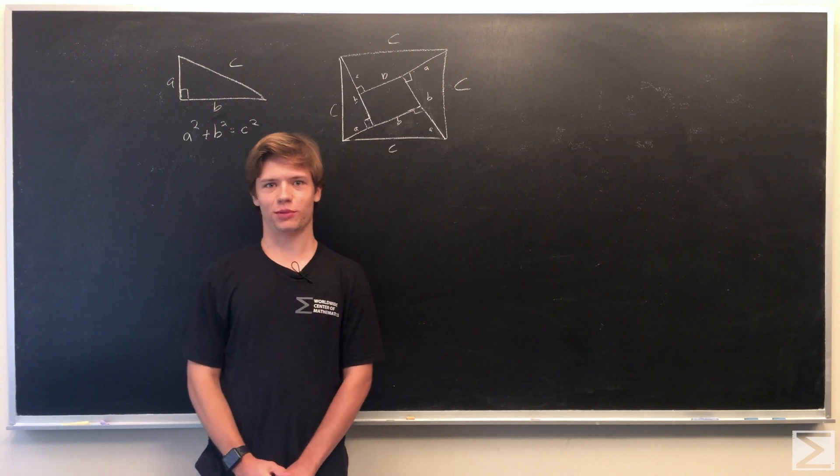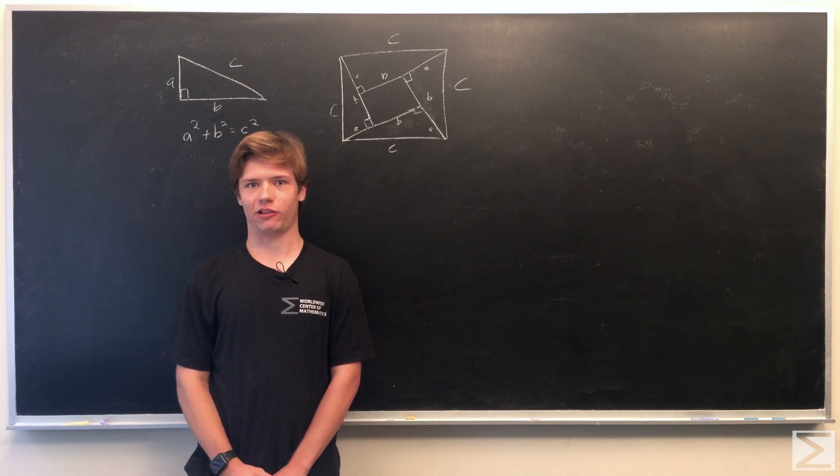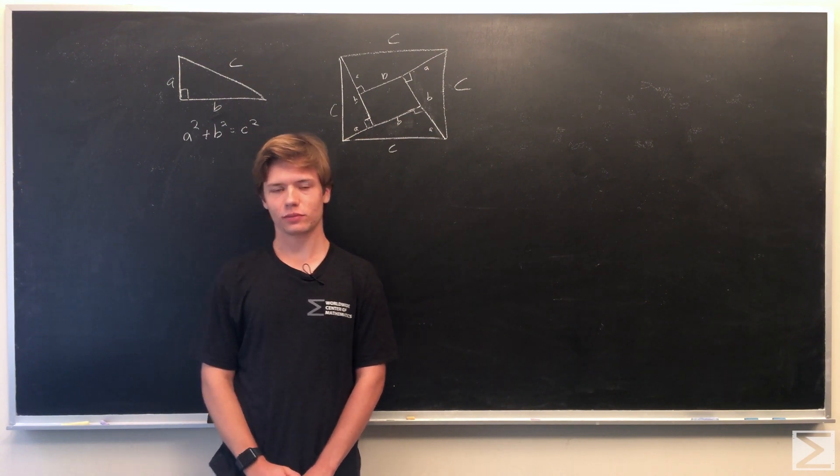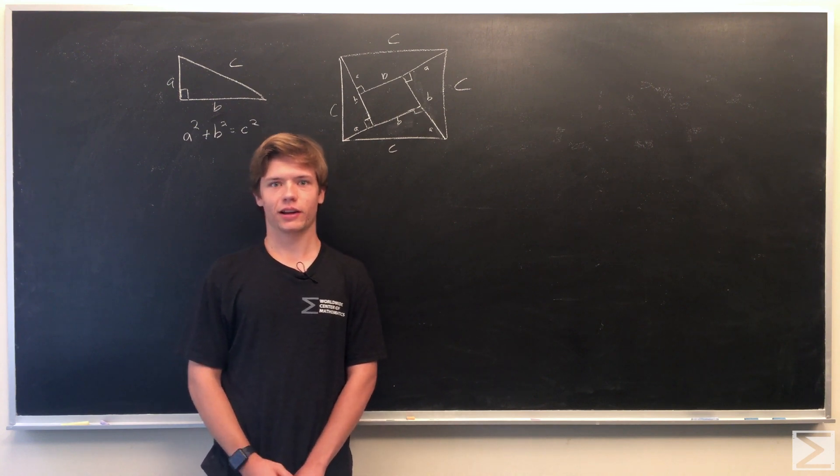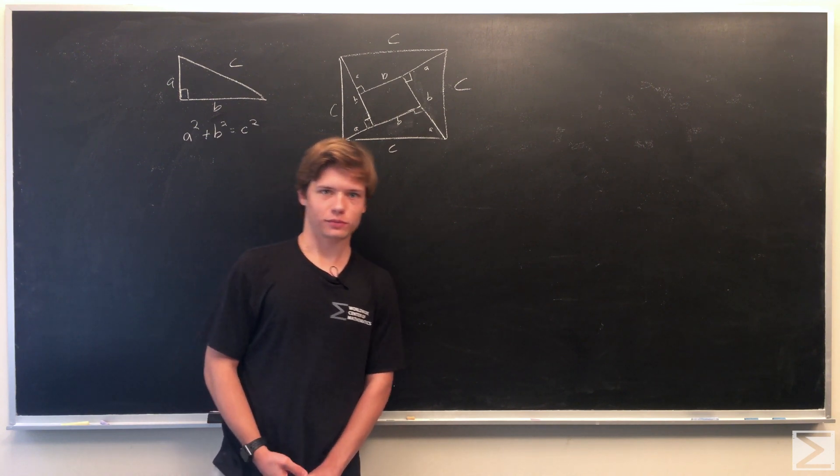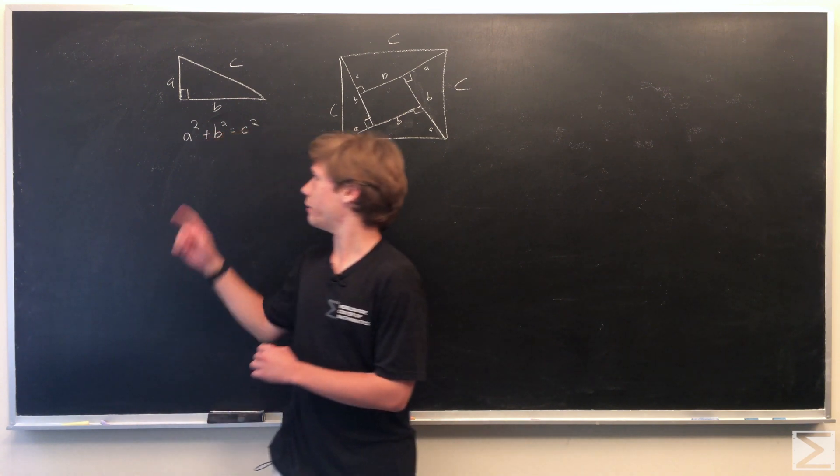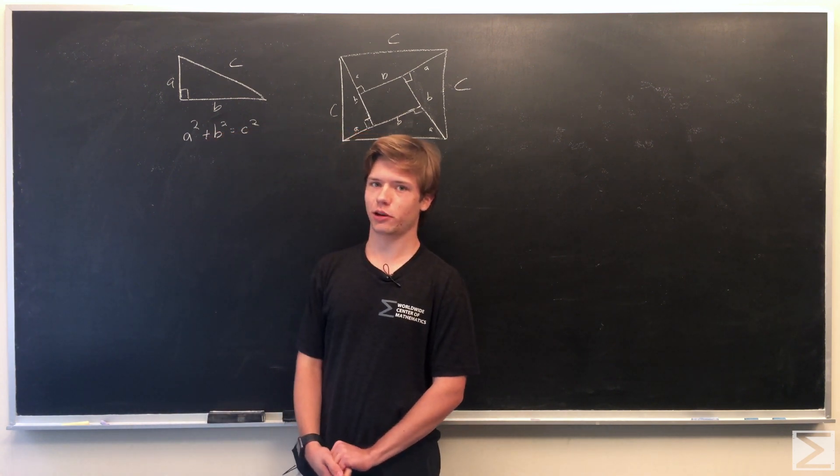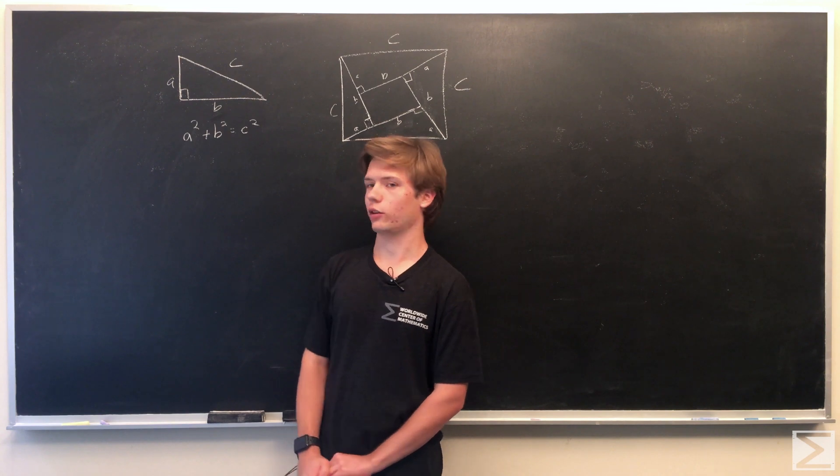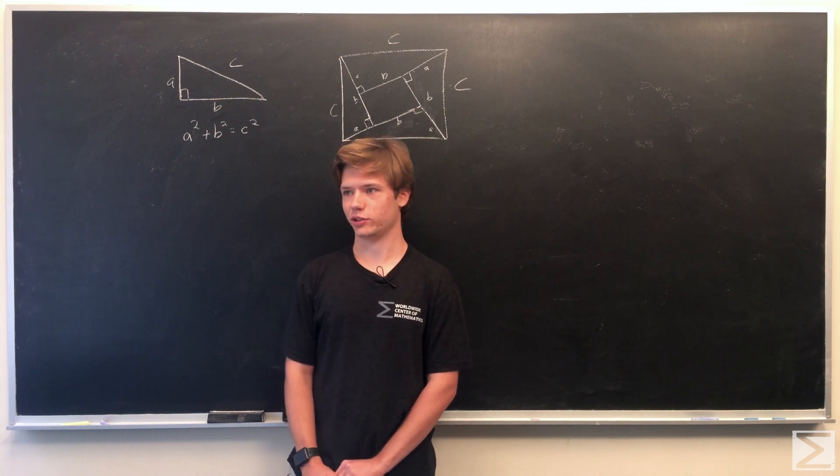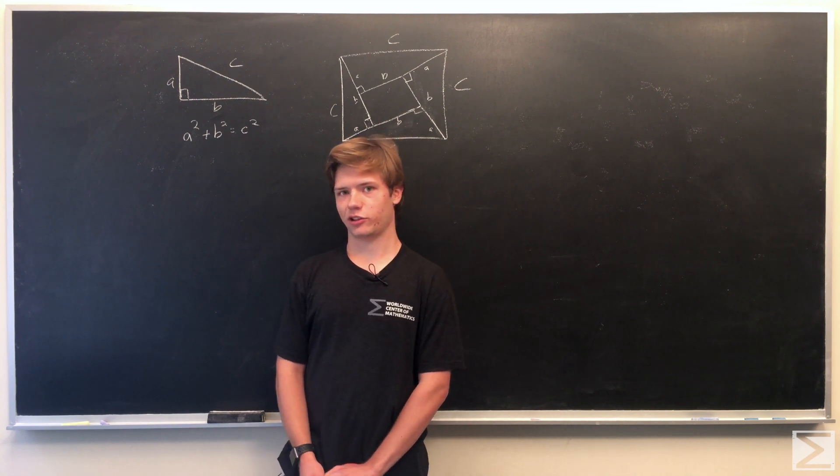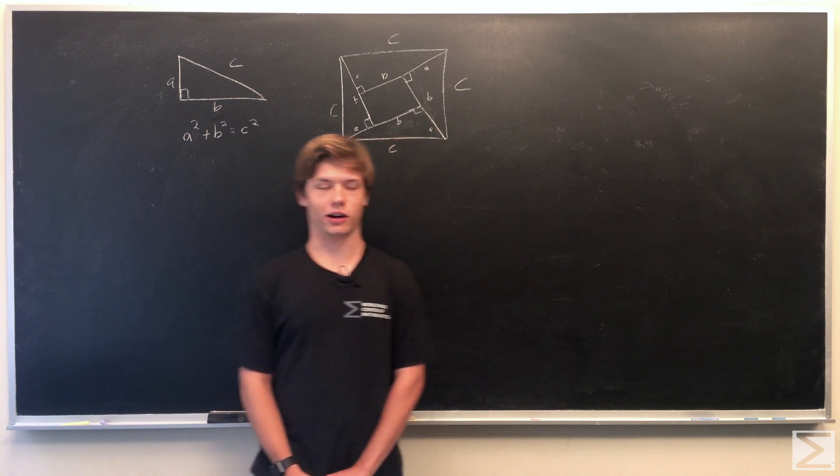So what we're going to do now is prove that Pythagorean's theorem works using Bhaskara's method. As you know, the Pythagorean theorem states that a squared plus b squared is equal to c squared for a right triangle with legs a and b and hypotenuse c. So now we're just going to prove that the way Bhaskara did.